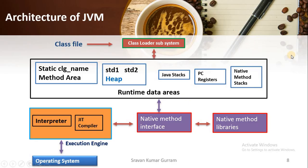We discussed JVM architecture in one of our videos — please watch that for better understanding. We have five types of data areas in the JVM. When the class file is loaded into the JVM, first the memory is allocated for the static variables in the method area. When you create objects, those objects are created within the heap memory. So memory is first allocated for static variables, and later the JVM allocates memory for objects. This is the reason we can access static variables without the help of objects.